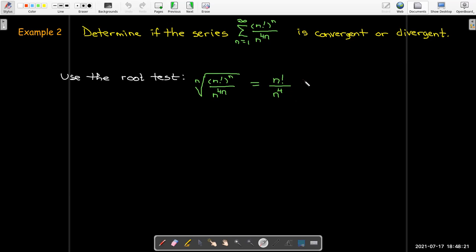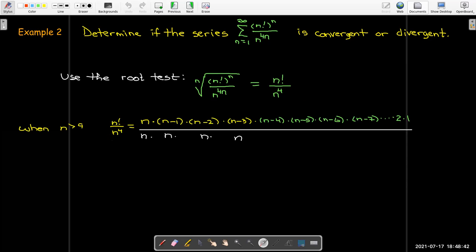And there might be a simpler way of showing this. Certainly you get a feel for these things, and we know that the factorial grows faster than n to the power of 4. So we certainly expect this to be divergent, but to show that it's divergent, we're just going to look for when n is large. Larger than 9 is going to be convenient. 9 is more than twice 4.